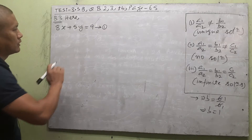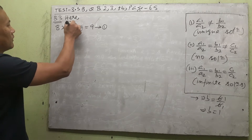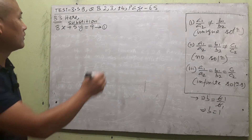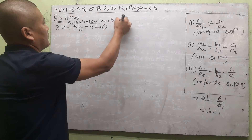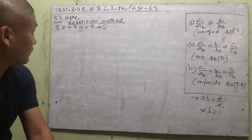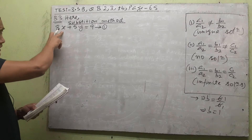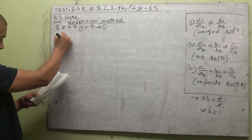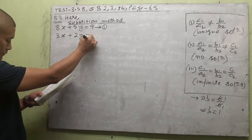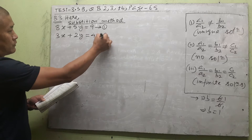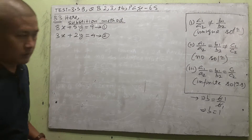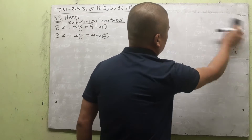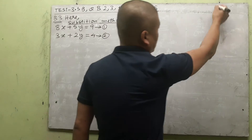Let us do the substitution method first. In substitution method, arranging the x term, y term, and constants is not strictly necessary, but there is a useful trick that helps us solve more easily. The second equation is 3x + 2y = 4, this is equation number 2. This trick is not a hard-and-fast rule but it helps us solve more easily.